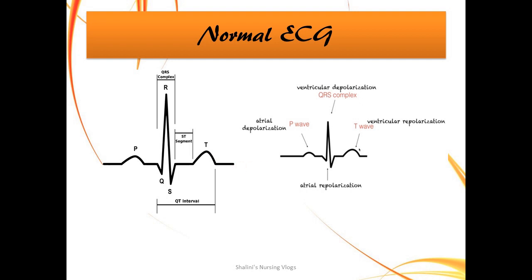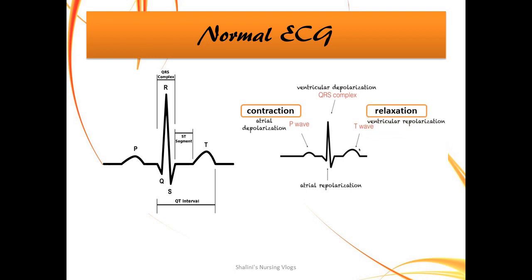In the second picture we see the meaning of each wave. The P wave represents atrial depolarization — depolarization means contraction. The QRS complex denotes ventricular depolarization, which again means contraction. The T wave represents ventricular repolarization, which denotes relaxation.